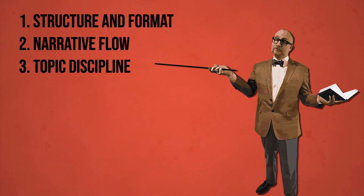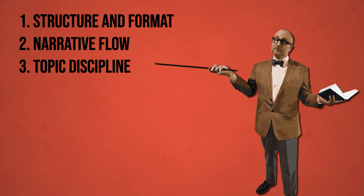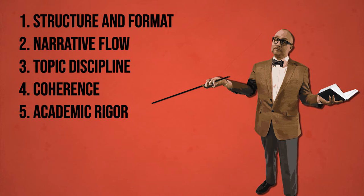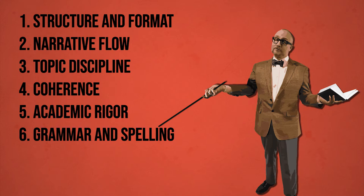Topic discipline: the content should always adhere to your stated research problem, never straying off topic. Coherence: the content clearly conveys your line of reasoning. Academic rigor: the content properly cites research and substantiates your claims and interpretations. Grammar and spelling: the content maintains correct use of active versus passive voice, past, present, and future tense, verb agreement, third person, and spelling.